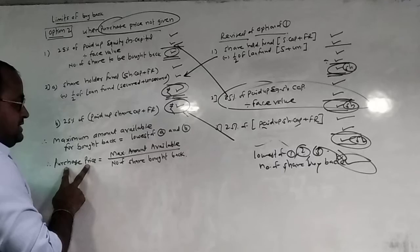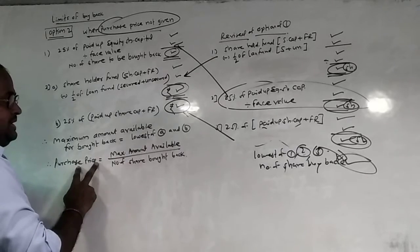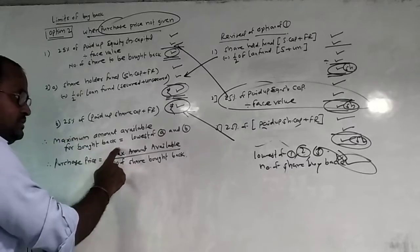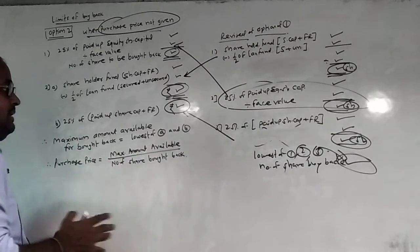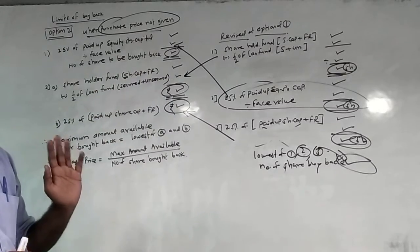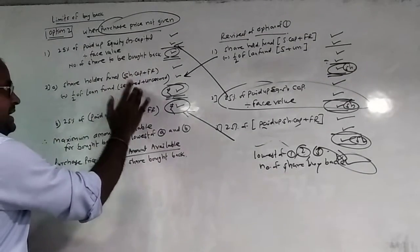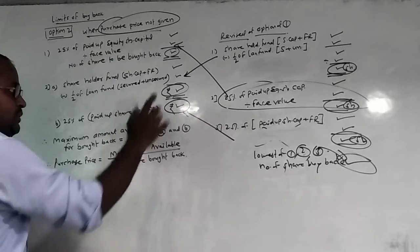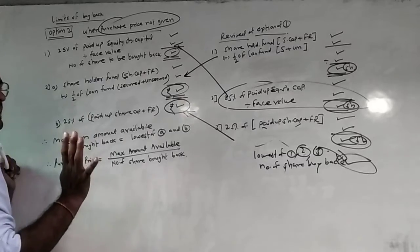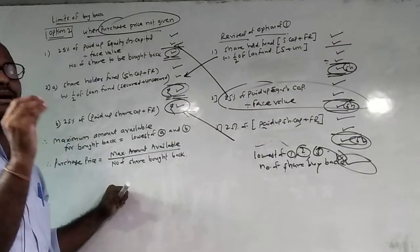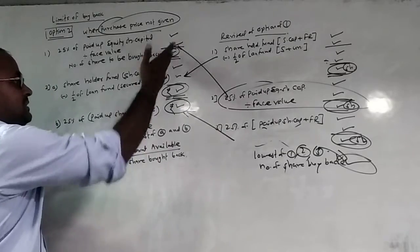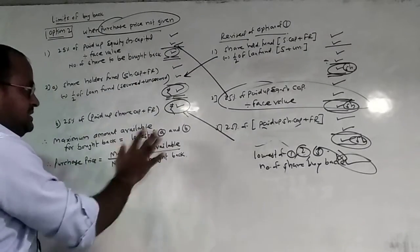Now the purchase price is equal to: maximum amount available for buyback divided by the number of shares to be bought back.